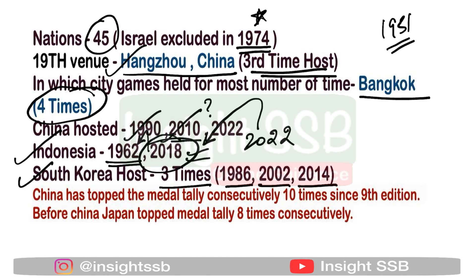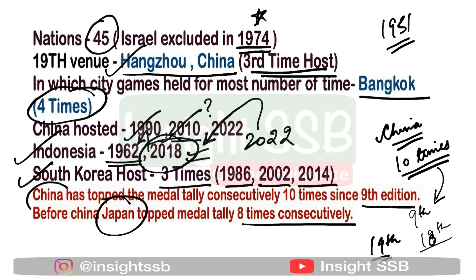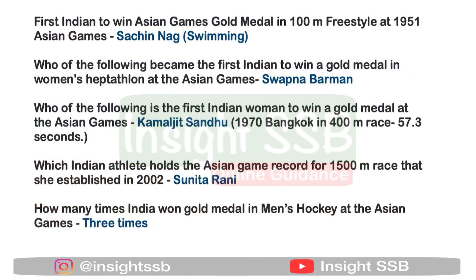Regarding the overall medal tally, China has topped it consecutively ten times — from the ninth to the 18th edition. Before that, Japan topped the medal tally for the first eight editions. So, from the first to the eighth edition it was Japan, and from the ninth to the 18th edition it was China. If asked who has won the most medal tallies overall, the answer is China.